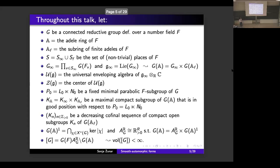Let us start with some notation. Throughout this talk, let G be a connected reductive group defined over a number field F with adele ring A and the sub-ring of finite adeles, which we will denote by A_F. Let S, S_infinity, and S_F be respectively the set of non-trivial places of F, the set of Archimedean places of F, and the set of non-Archimedean places of F. We define the Lie group G_infinity by this formula where F_v is the completion of F at the place v, and denote by g_infinity the Lie algebra of the Lie group G_infinity.